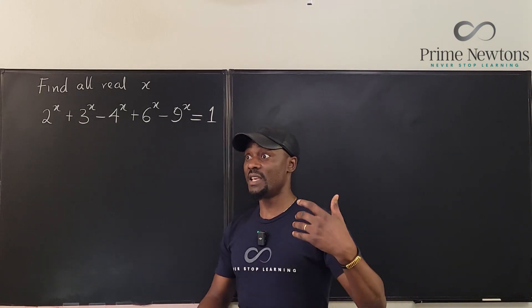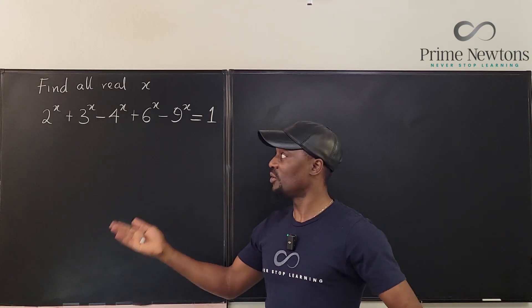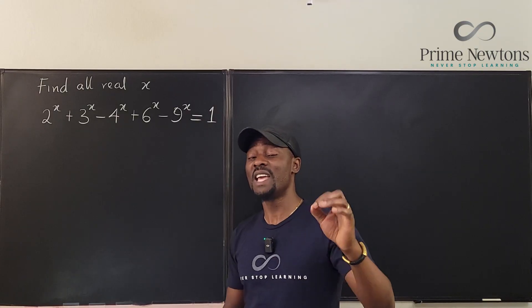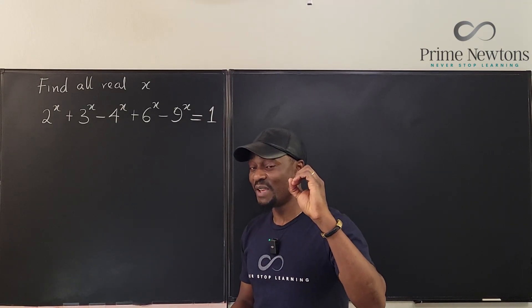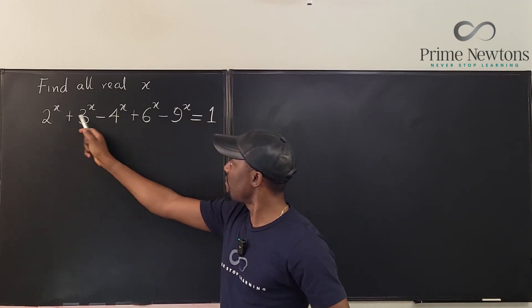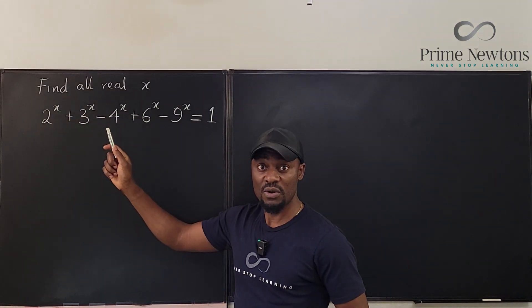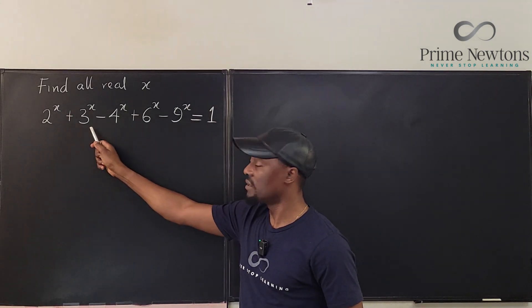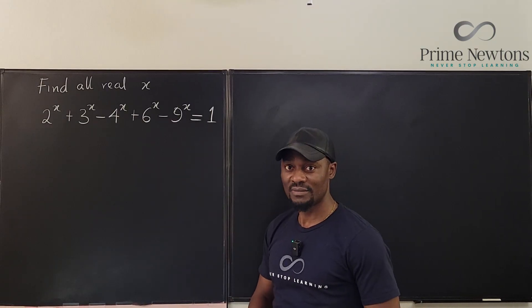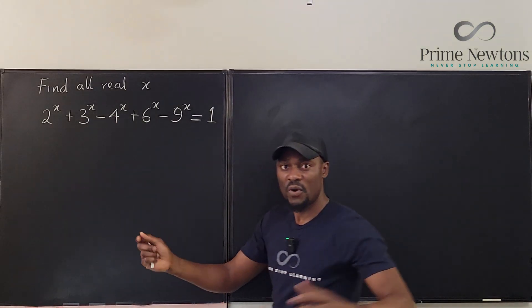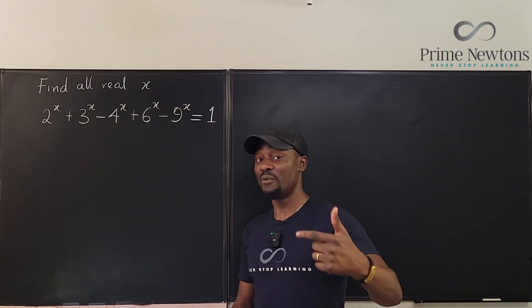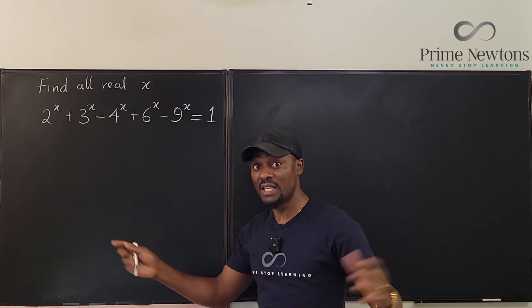What I would do if this was a competition and I just needed one answer is start guessing, and the most important culprit in questions like this is the number zero. If I plug in zero for x, I get 2^0 which is 1, so everything becomes 1. That gives me 1 + 1 - 1 + 1 - 1, which clearly equals 1 because you have three positives and two negatives. So we found a solution: x = 0 is a solution.